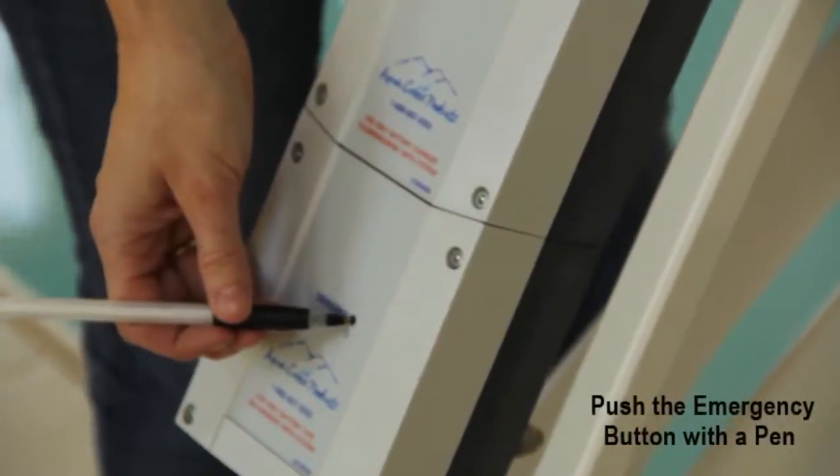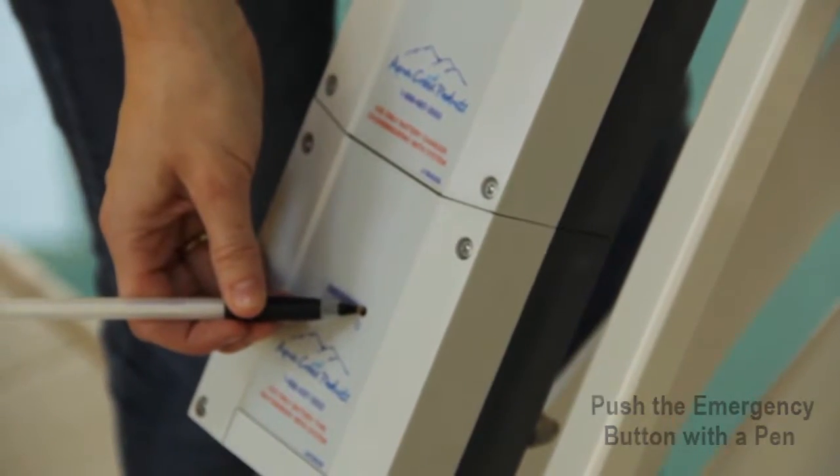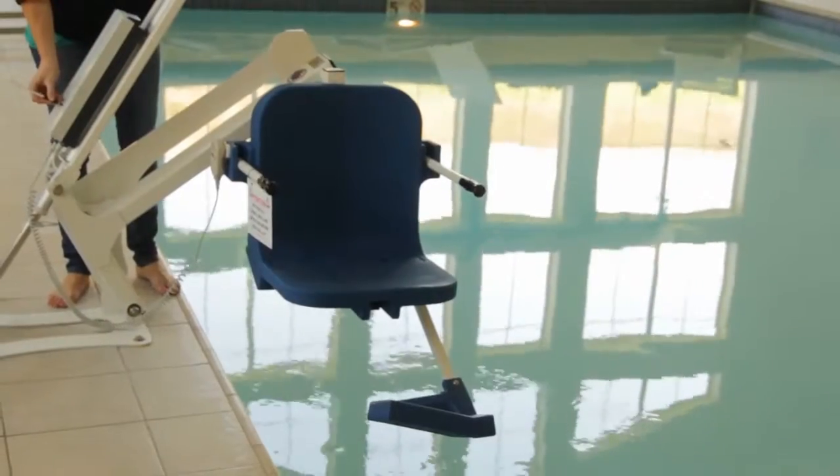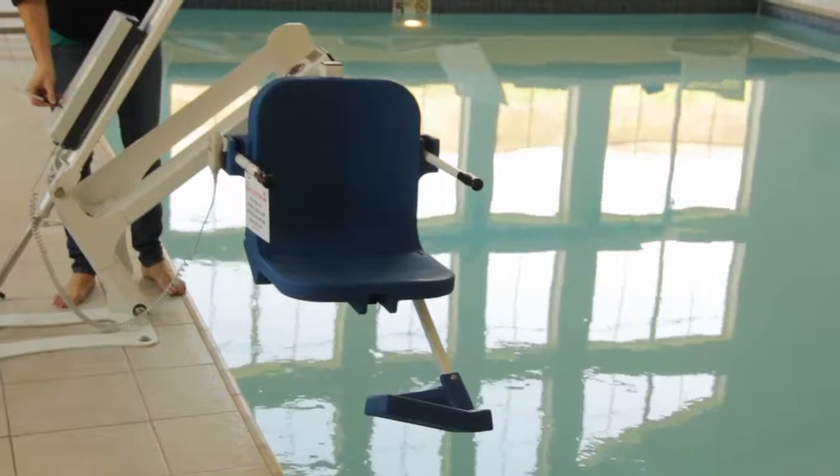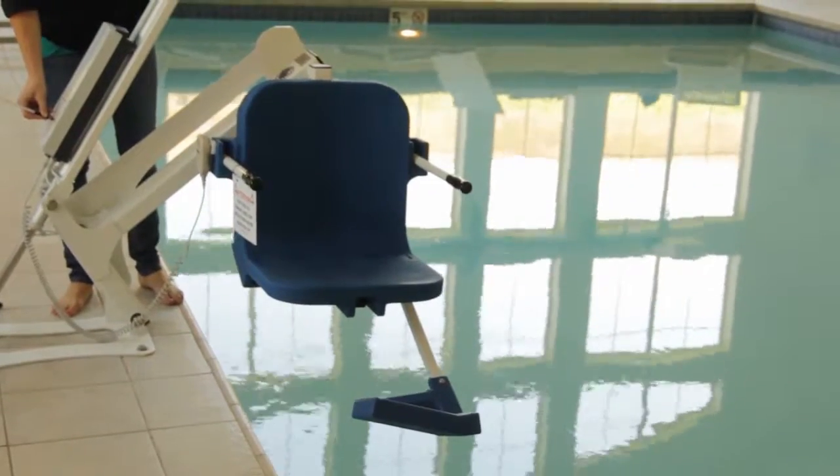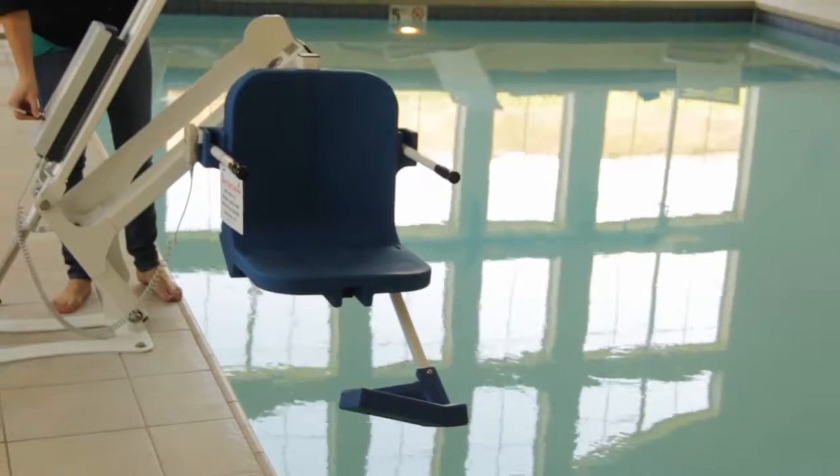First, take a small pen and push the emergency button on the control box. This should retract your lift to deck position, indicating you may need to replace your remote handset. Please call customer service.